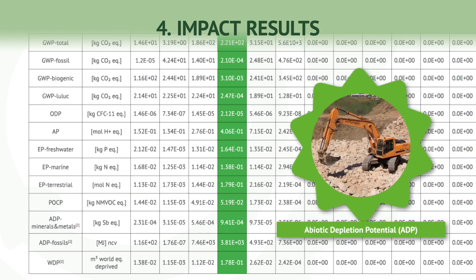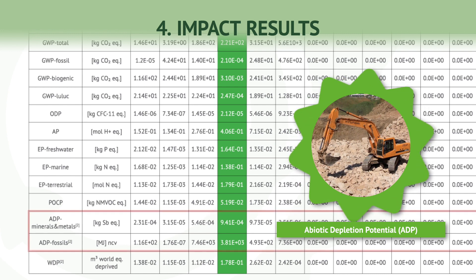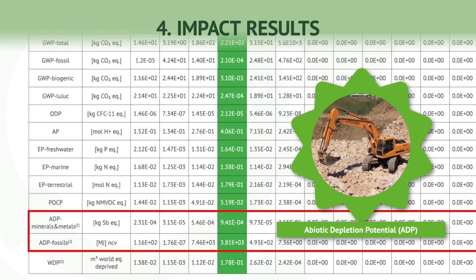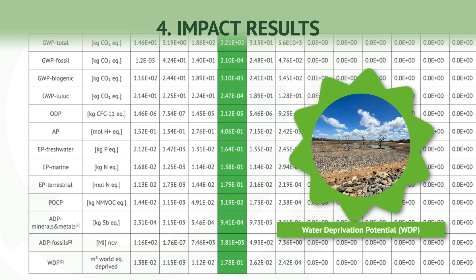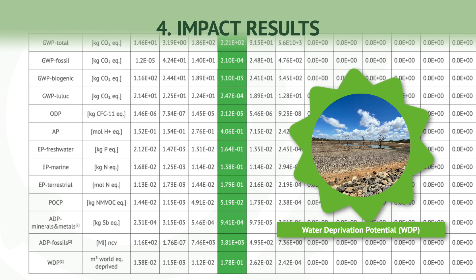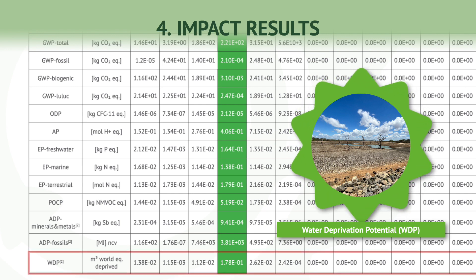The sixth category is Abiotic Depletion Potential. This focuses on the decreasing availability of non-renewable resources due to extraction and underlying scarcity. It includes abiotic depletion for non-fossil and fossil resources. The seventh indicator is Water Deprivation Potential, or WDP, which assesses the potential for water deprivation, considering the water usage associated with the product.